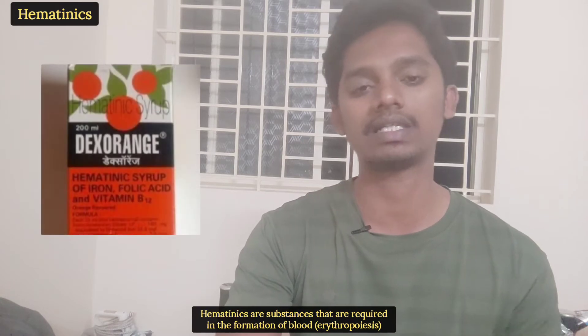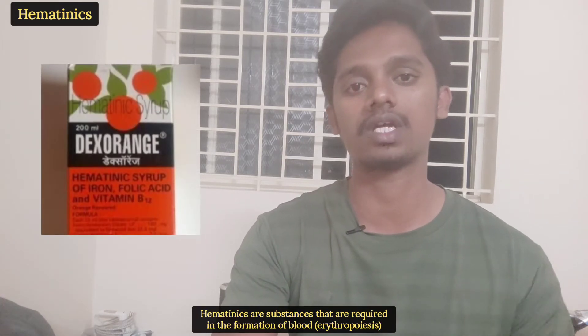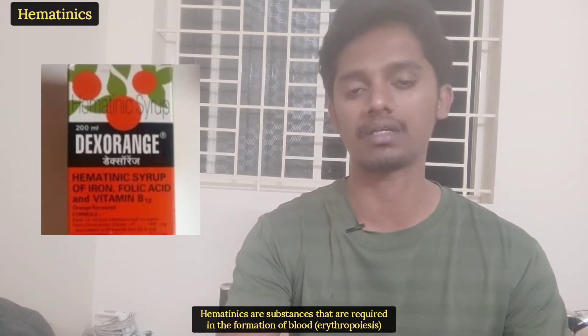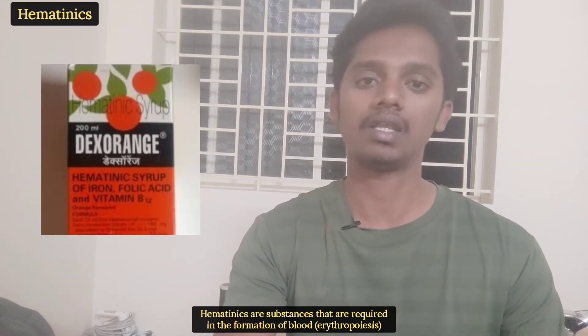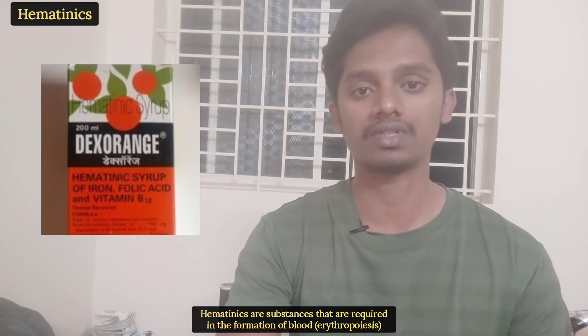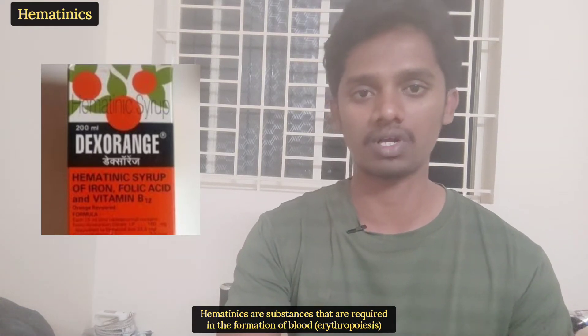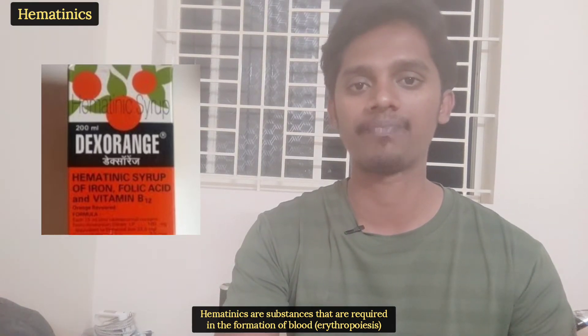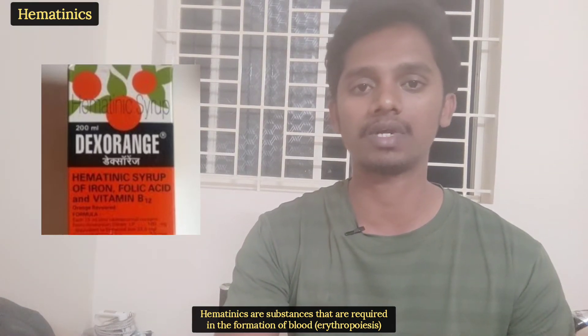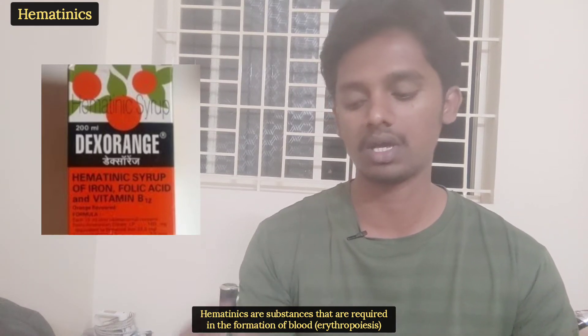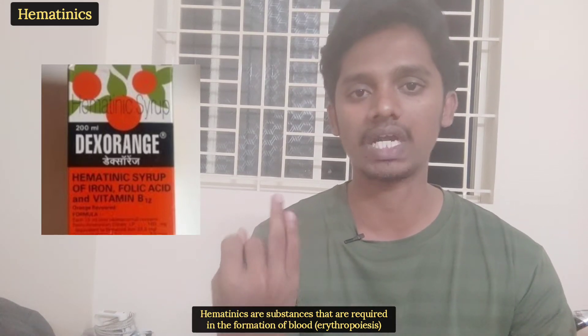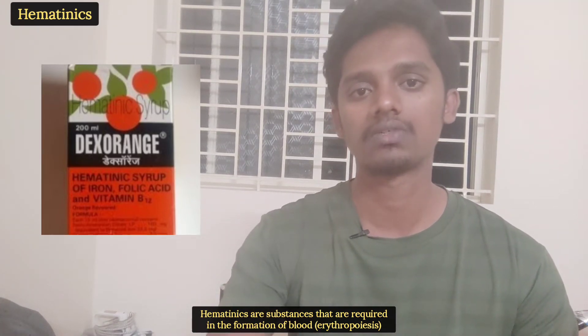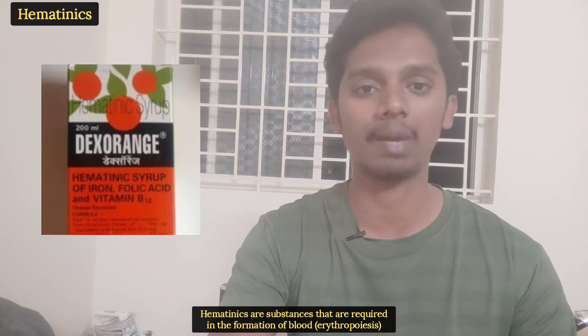Hello everyone, today we will be talking about hematinics. Hematinics are substances required in the formation of blood. We will be discussing 3 compounds: iron, vitamin B12, and folic acid. These 3 compounds are hematinics.